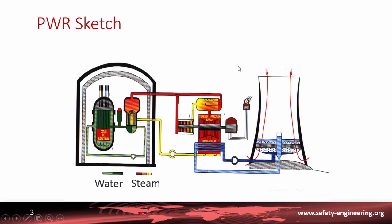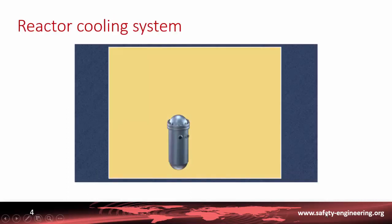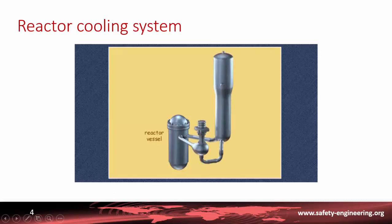We will see in more detail the different elements of a nuclear reactor, especially in the coming small videos. The heat released by the fuel in the reactor vessel is removed by cooling loops. Each loop includes a steam generator and a pump.